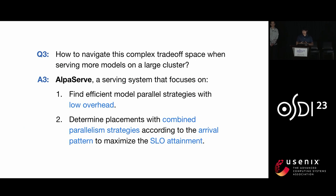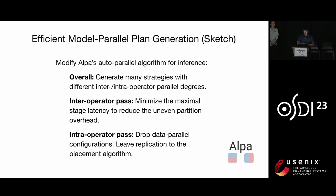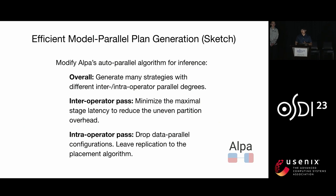I'll give a high-level sketch of these two parts — you can check the details in our paper. To find an efficient model parallel inference plan with low overhead, we modify Alpa's auto-parallel algorithm for inference. We generate many strategies with different inter- and intra-operator parallel degrees. In inter-operator paths, we minimize the maximum stage latency to reduce uneven partition overhead. In intra-operator paths, we drop data parallel configurations and leave replication to the placement algorithm.